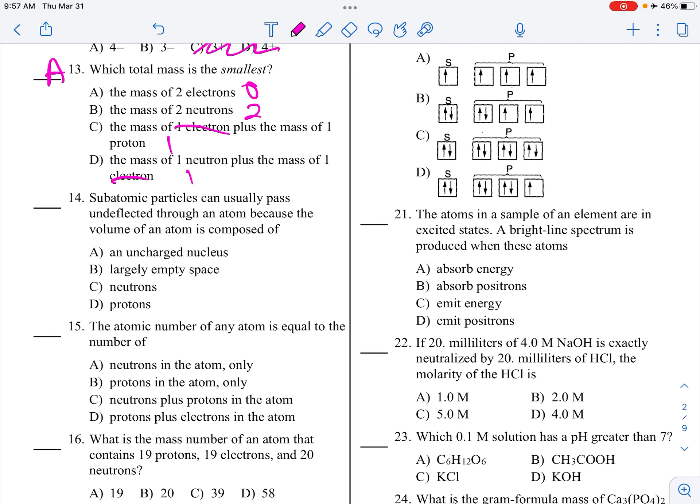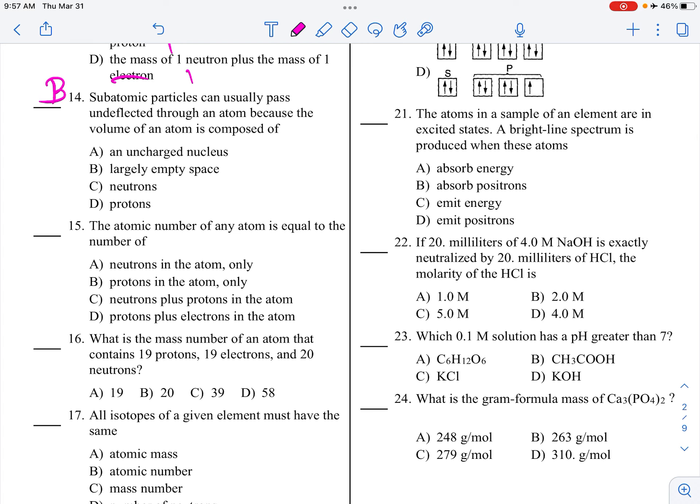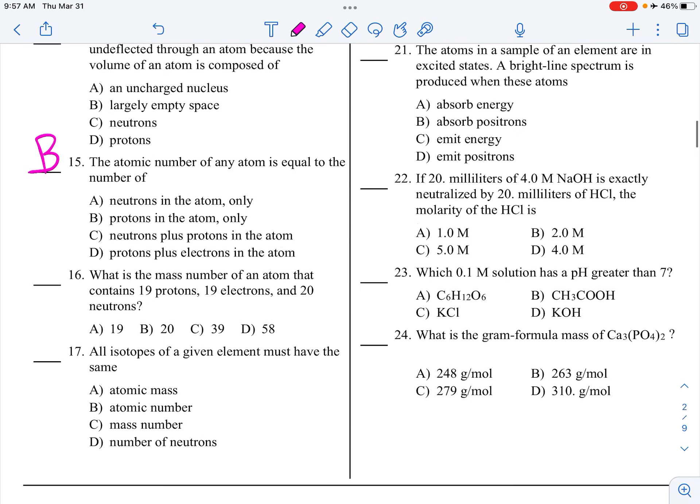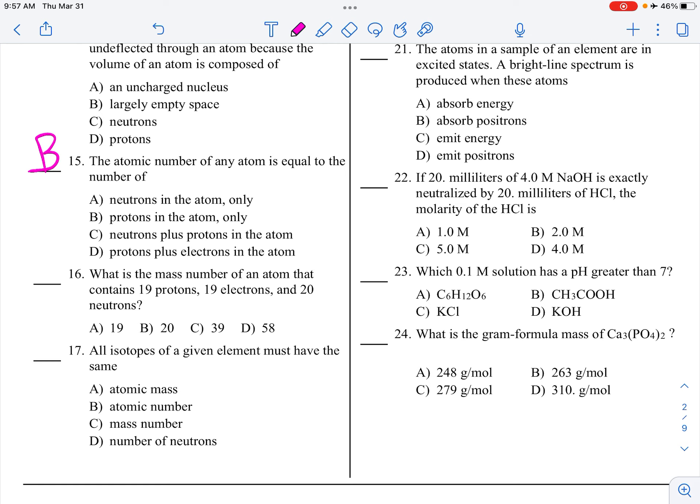Subatomic particles can usually pass undeflected through an atom, because the volume of an atom is composed of mostly empty space. That was Rutherford's Goldfoil experiment. Atomic number of any atom is equal to the number of protons only. Yes, you might have some examples when you also have the same number of neutrons, which is the same, but they don't have to be the same. What is the mass number of an atom that contains 19 protons, 19 electrons, and 20 neutrons? So, essentially, electrons don't have mass, so mass number is the sum of protons and neutrons, so 19 plus 20 gives me 39.